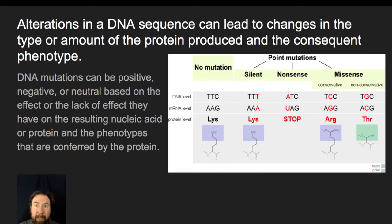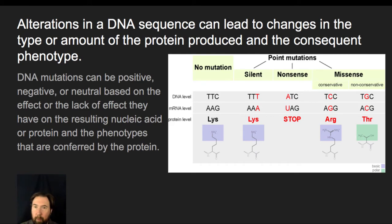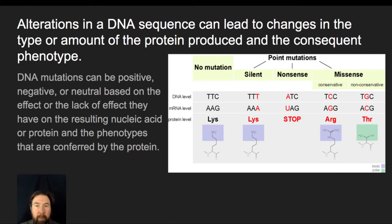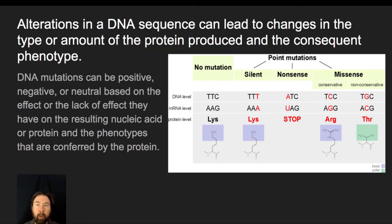Alterations of the DNA sequence lead to changes in the type or amount of protein produced and the consequences of those phenotypes. Most people have the misconception that mutations are bad, but mutations are neither positive nor negative as a rule. Some can be positive, some negative, and some — like a silent mutation — are totally neutral based on their effect on the resulting nucleic acid or protein and the phenotypes conferred. There are also instances where the loss of a particular protein may not impact survivability at all, and we've seen examples where the loss of certain proteins in organisms has no survivability impact.